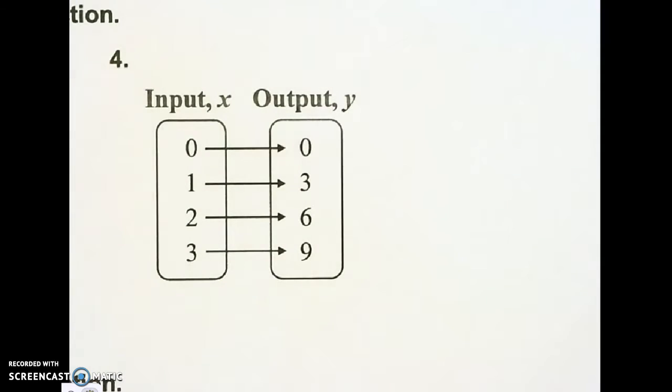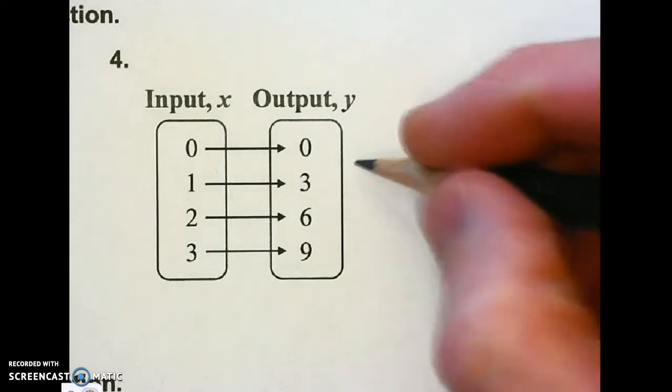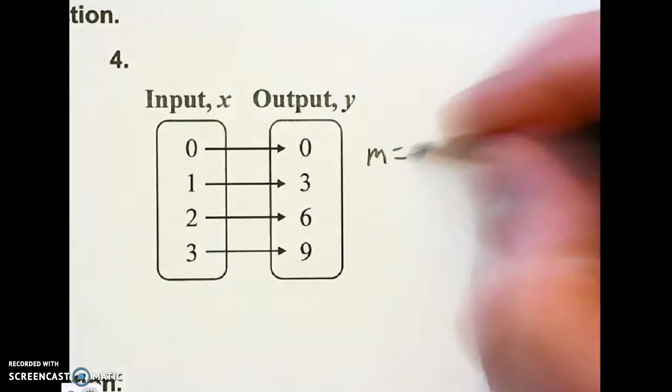We're going to write an equation from this mapping diagram, or a function. Same thing, y equals mx plus b. First thing I'm going to do is find my slope, so I'm going to put m equals off to the side.